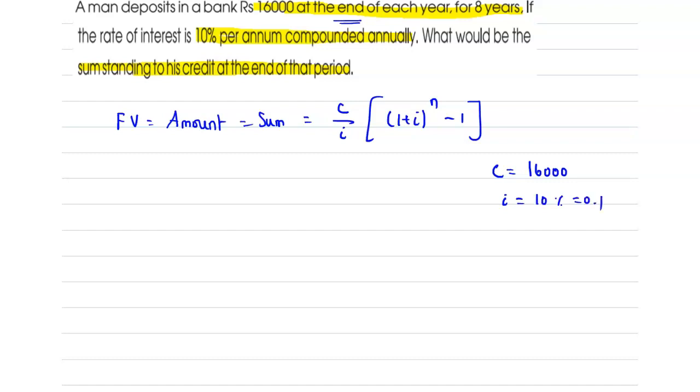Therefore, future value equals 16,000 divided by 0.1 multiplied by (1 + 0.1)^8 minus 1, which is equal to the value for 1.1 power 8 is 2.1435 minus 1.